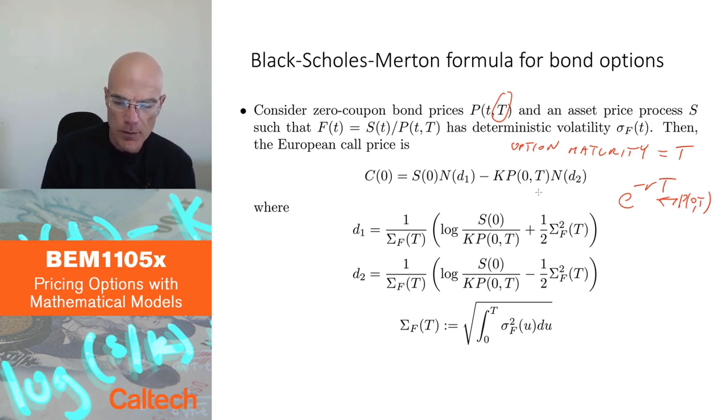D1 and D2 look kind of similar to the Black-Scholes case, except, again, I never see the r, because r is random. Instead of everywhere, instead where I had e to the rt, I just replace it by P zero T. So there is the bond price inside, here and here. And also, since volatility may not be constant, but it may be time dependent, then I also have to replace sigma square root of t by this thing here, which I call the capital sigma F of capital T. It's the square root of integral from zero to t, sigma squared of u du.